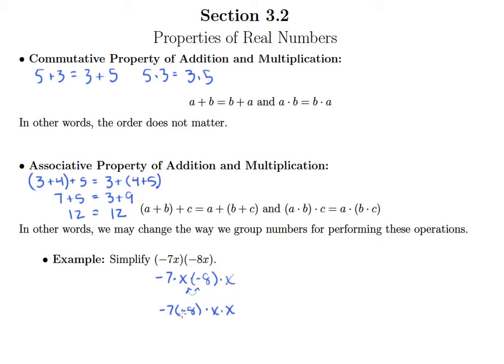So I can have my numbers next to my numbers and my variables next to my variables. Now I can take negative 7 times negative 8. That's 56. And then x times x. Remember, anything times itself is that thing squared. So this simplifies into 56x squared.